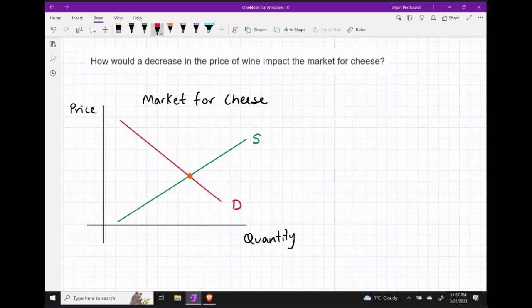Suppose we have the following market for cheese. How would a decrease in the price of wine impact this market?